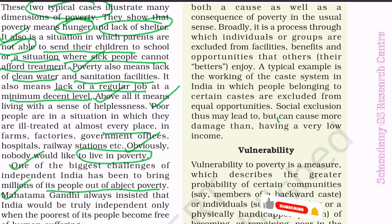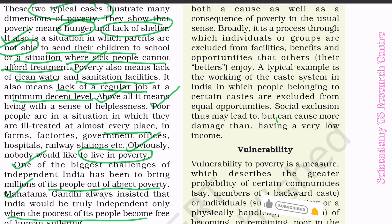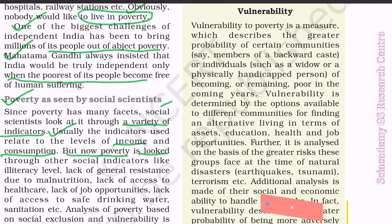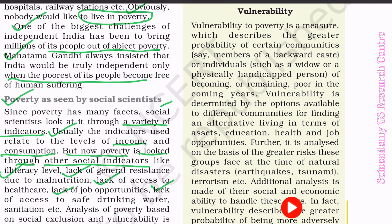Poverty as seen by social scientists: Since poverty has many facets, social scientists look at it through a variety of indicators. Usually, the indicators used relate to the levels of income and consumption. But now poverty is looked at through other social indicators like illiteracy level, lack of general resistance due to malnutrition, lack of access to health care, lack of job opportunities, lack of access to safe drinking water, sanitation, etc. Analysis of poverty based on social exclusion and vulnerability is now becoming very common.